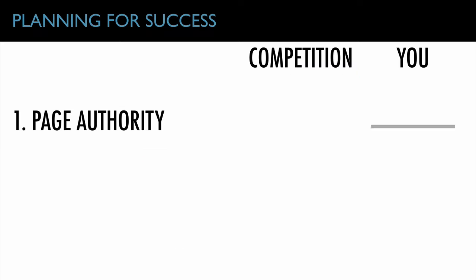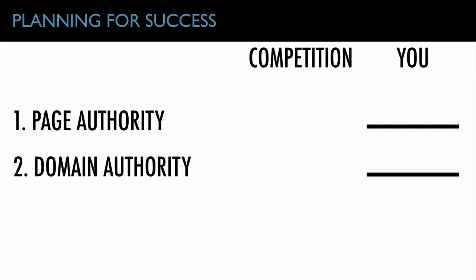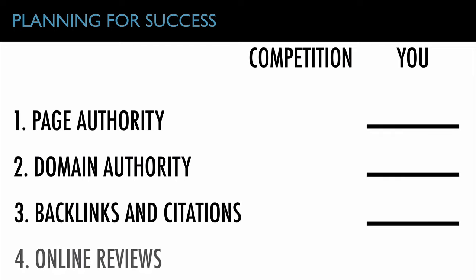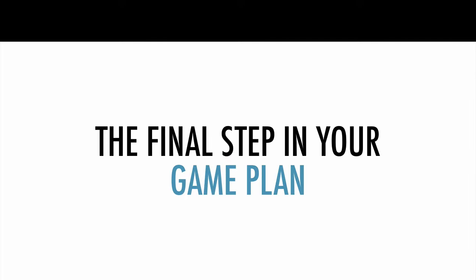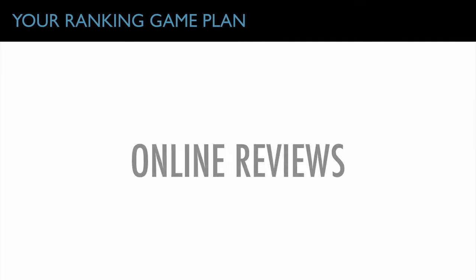Write down this chart with page authority, domain authority, backlinks and citations, and online reviews. Rate yourself first on how much of this you have done, then look at your top competitor side by side. Now you have a very specific goal as to what you need to do to get that natural organic Google ranking and capture the highest quality traffic in your local marketplace. Here's the final step in your ranking game plan — you need online reviews.